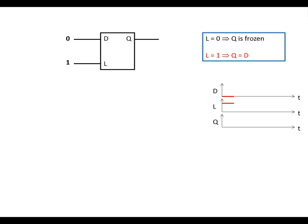The D latch. Here's a diagram showing the D latch. We've got two inputs, D and L, and one output Q. The characteristic is given in the box here. When L is high, the output Q is exactly the same as the input D. When L is low, Q is frozen into whichever state it was in previously.